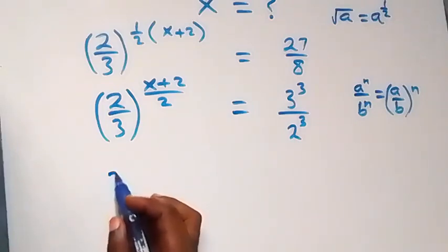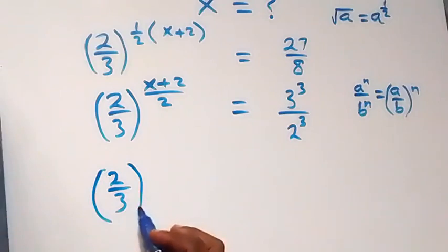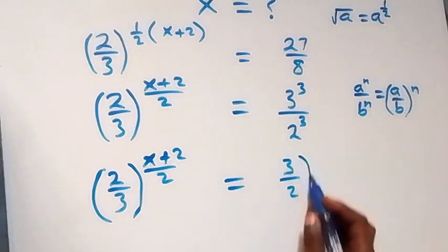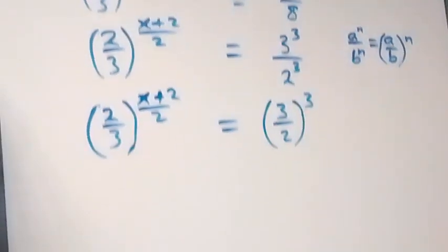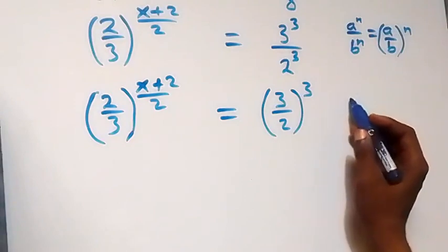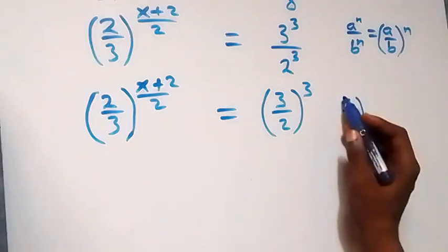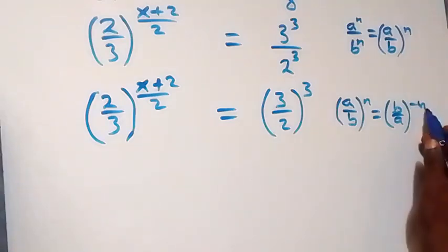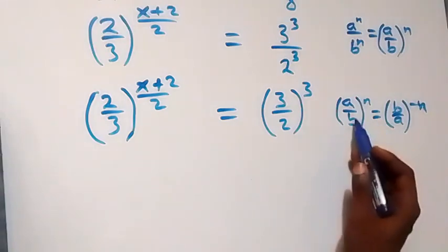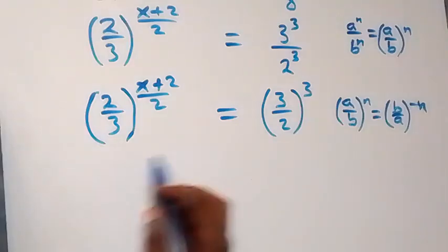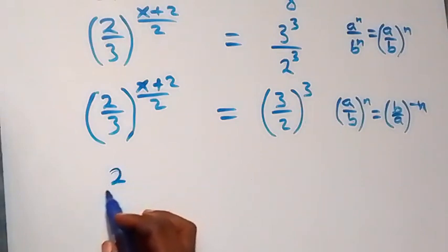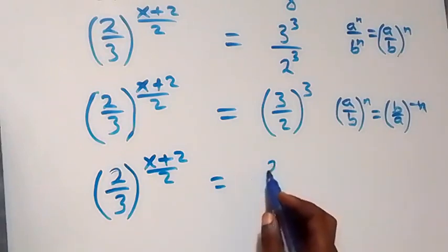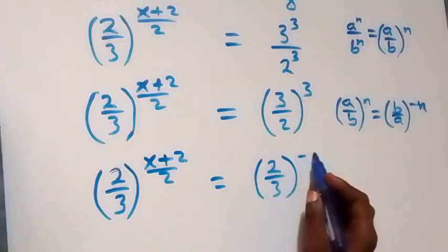This becomes 2 over 3 raised to power x plus 2 over 2, which equals 3 over 2 raised to power 3. Also from the law of indices, when we have a over b raised to power n, this is the same thing as b over a raised to power minus n — the minus serves as the reciprocal. So we can interchange and raise to power minus 3, giving us 2 over 3 raised to power minus 3.